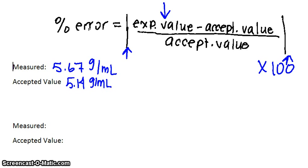So what we're going to take is the experimental value, which is 5.67, and subtract the accepted value, which is 5.14 grams per milliliter.